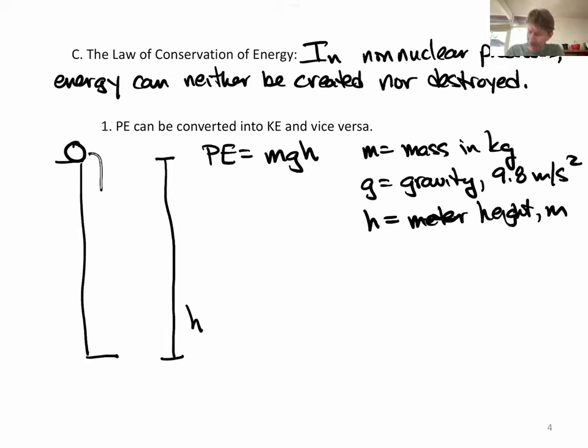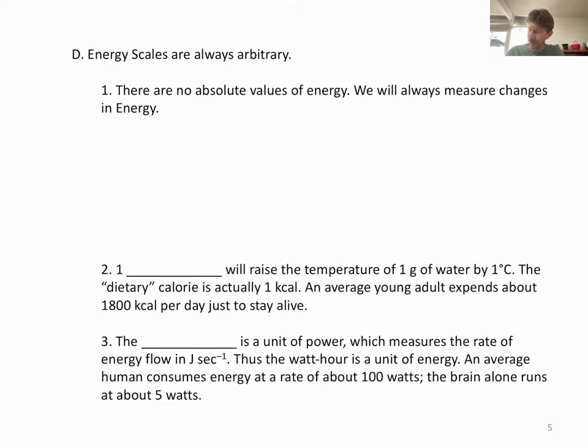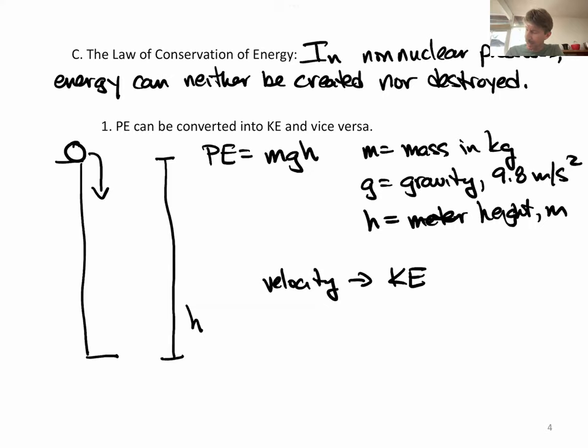If we were to push this ball off of the cliff, it would fall and get a velocity. And velocity, or movement, is kinetic energy. We're showing that we can convert potential energy into kinetic energy.